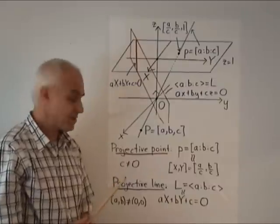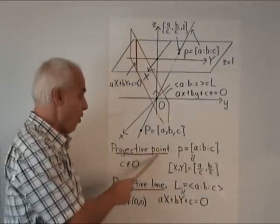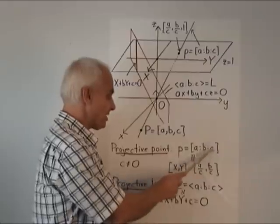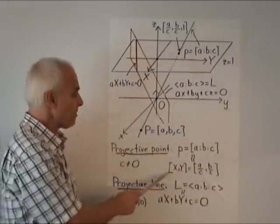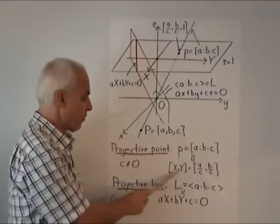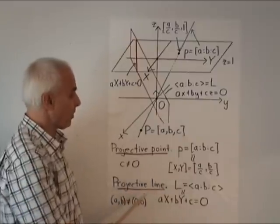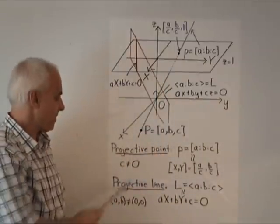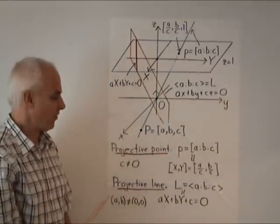So to summarize, a projective point is notationally given by square brackets A to B to C. And it can be identified with the planar point whose capital X and capital Y coordinates are A over C and B over C. That's provided C is not equal to zero.